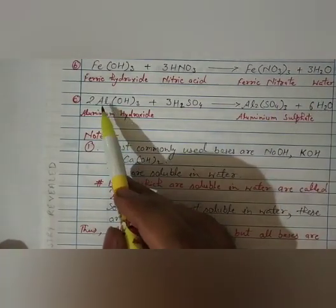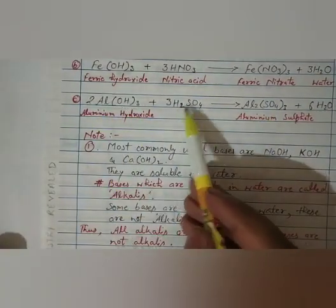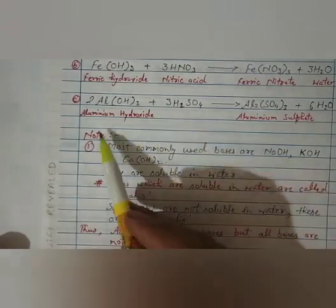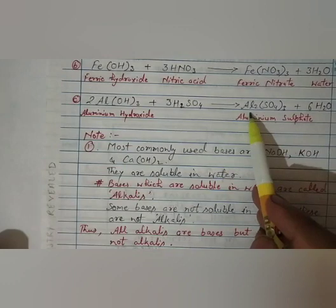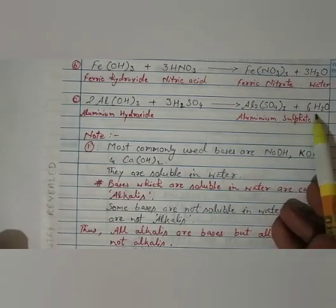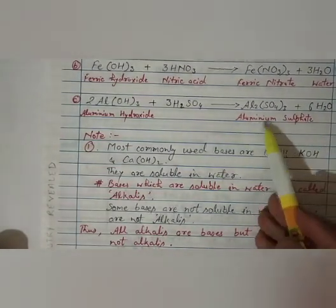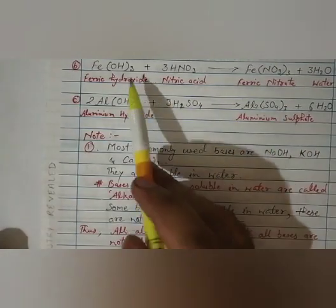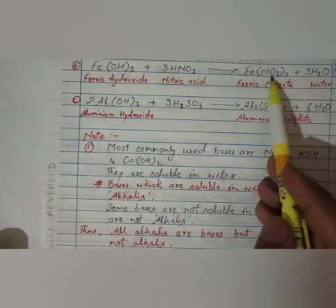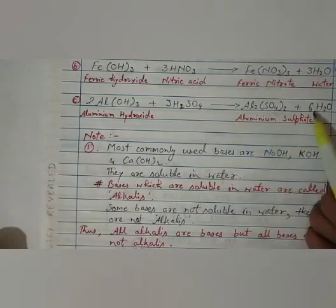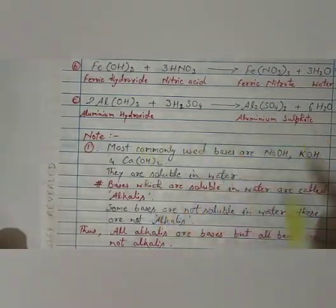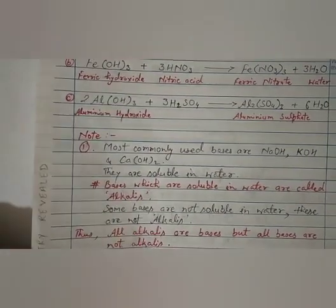One more example: aluminum hydroxide plus H2SO4, this is sulfuric acid. This is aluminum hydroxide. It is forming aluminum sulfate Al2(SO4)3 plus 6H2O, that is water. So you can see base plus acid gives salt plus water. Base plus acid gives salt plus water. So all these reactions are neutralization reaction examples.